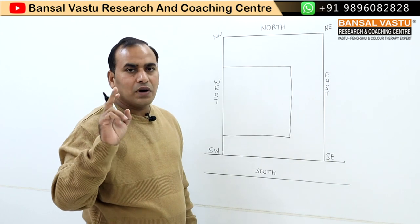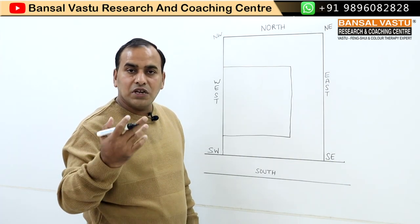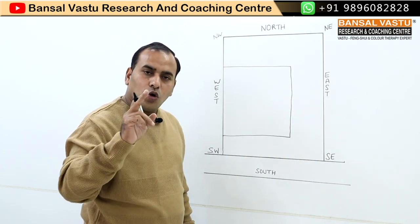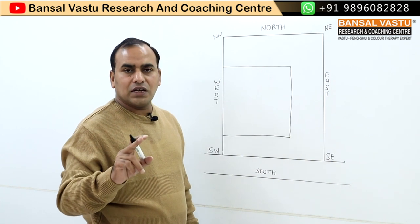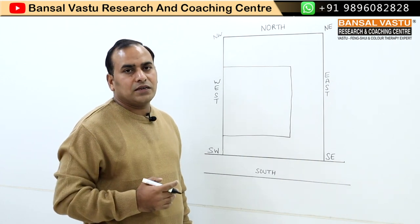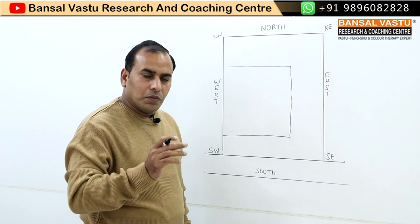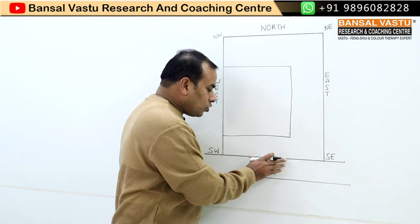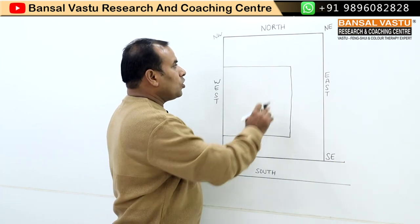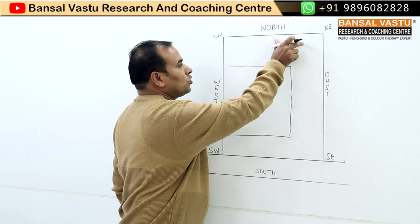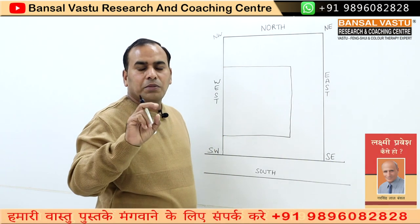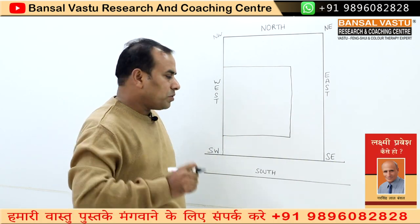Whether you are building a new building or watching my first video about an existing one, you can correct your compound wall. Because you are building a house, the South wall should be more and more — meaning taller. The North wall and East wall should be at one level, while South wall and West wall should be higher.